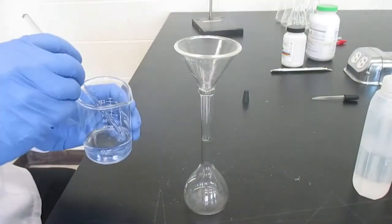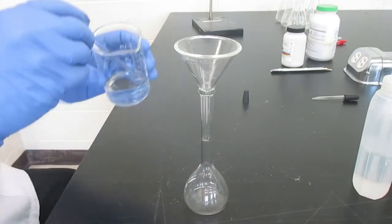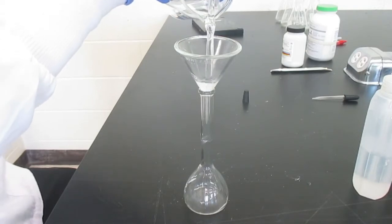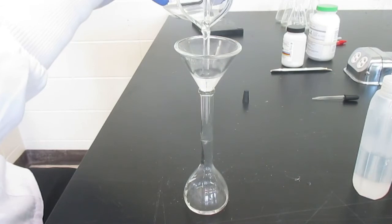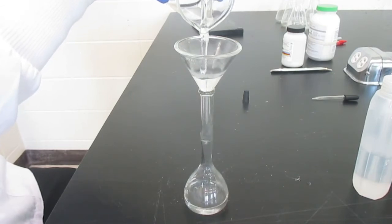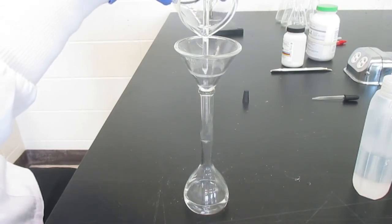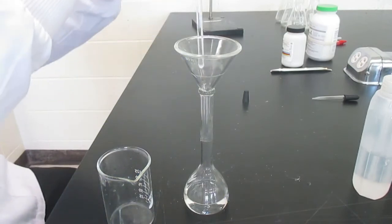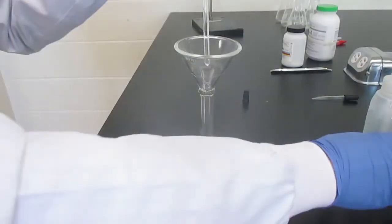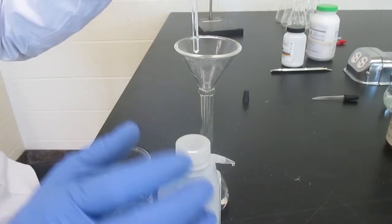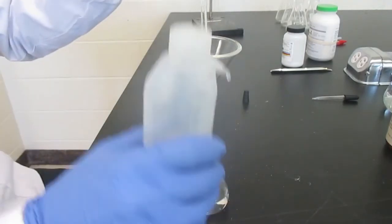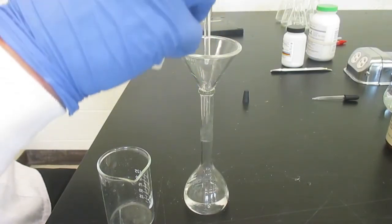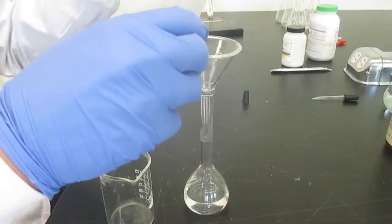So let's pour this into our volumetric flask. And I'm gonna pour down the stirring rod so that I don't spill any. And everything has to be rinsed. So the accuracy of this solution depends on a couple of things. It depends on our equipment being able to weigh accurately. It depends on our ability to transfer every single molecule that we weighed into our volumetric flask here.